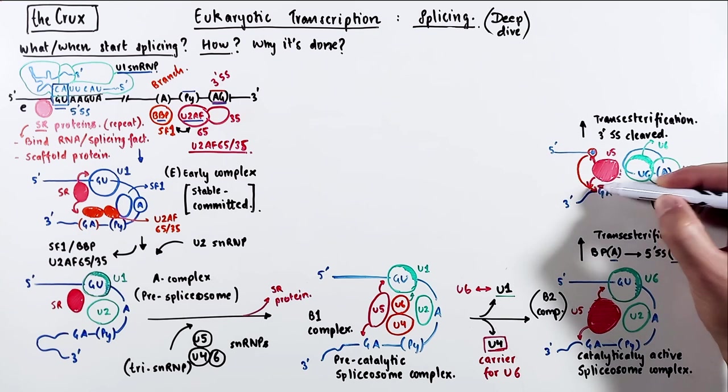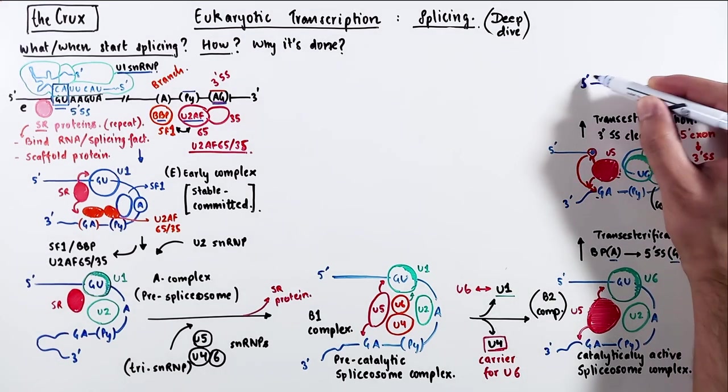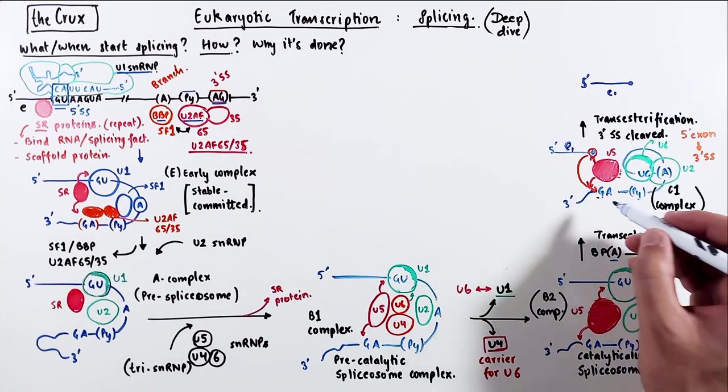the upstream exon gets ligated to the downstream exon. So essentially, the 5' exon attacks the 3' splice site. So after this step, the 2 exons have ligated,